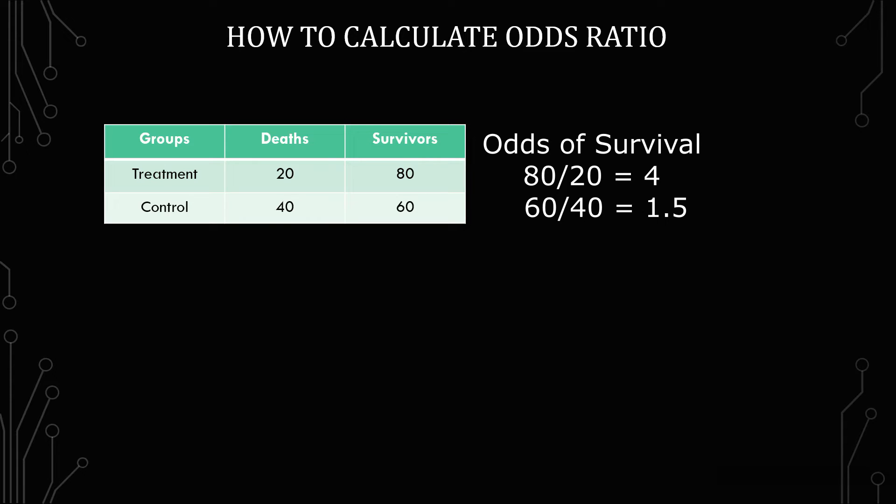The next step is to do the odds ratio. What I'm going to do is treatment over control, so 4 divided by 1.5, which gives me 2.666 repeating, but I'm going to round to 2.67. And so now you have 2.67 for your odds ratio.